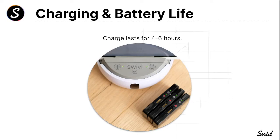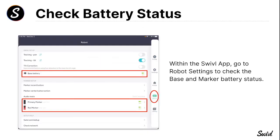The battery life lasts anywhere from four to six hours, though in some experience we've seen it last a little longer depending on use. We recommend that you charge it every evening. To check the battery status inside the Swivel app, go to robot settings — the fourth icon on the right that looks like a robot — and you'll see the base battery percentage, as well as the primary and secondary marker percentages. This is the Swivel Teams app.